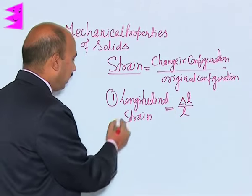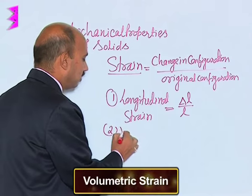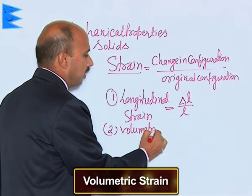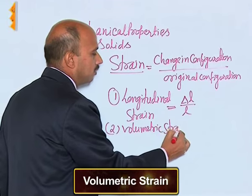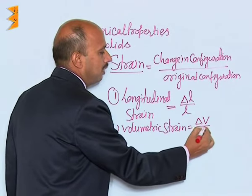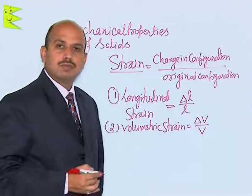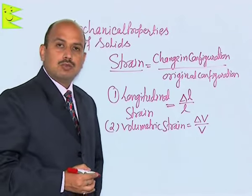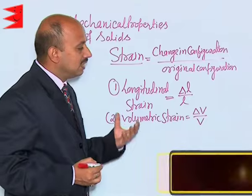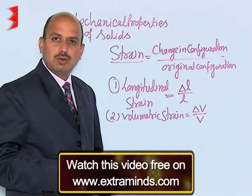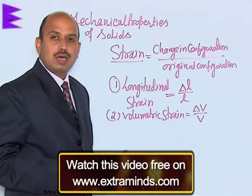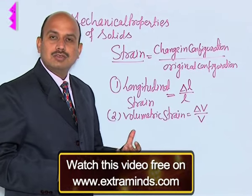Similarly, volumetric strain is defined as change in volume divided by original volume. When you compress a body or apply compressive stress, there is a decrease in the volume, and that type of strain is known as volumetric strain.